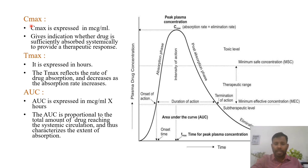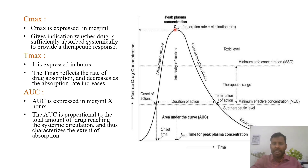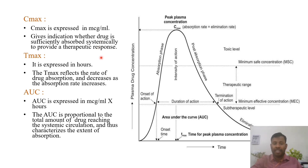First one is Cmax, which means peak plasma concentration. This point is the peak plasma concentration — the highest drug concentration in plasma. The name itself says everything. It can be expressed in microgram per ml or nanogram per ml.